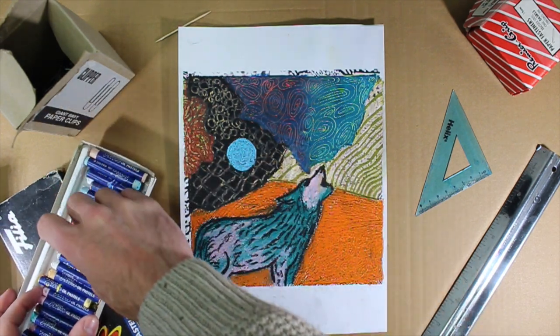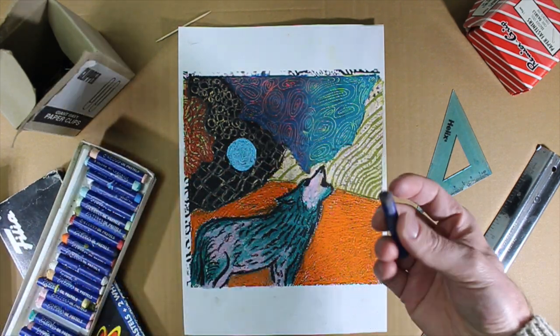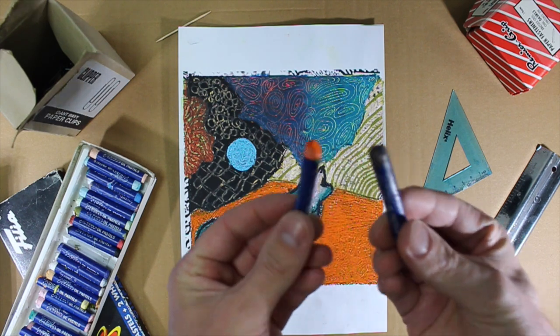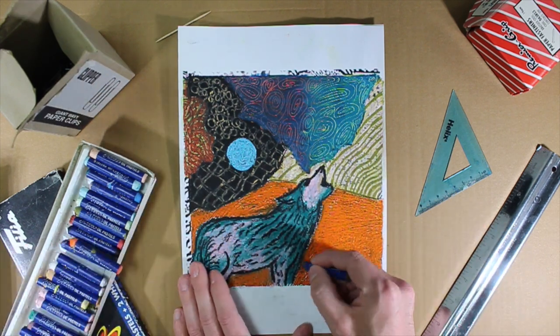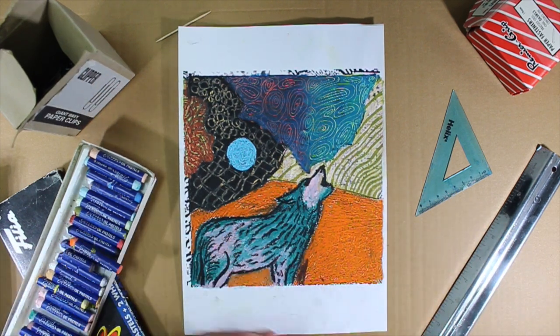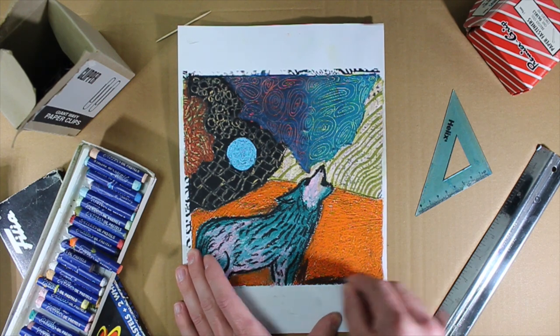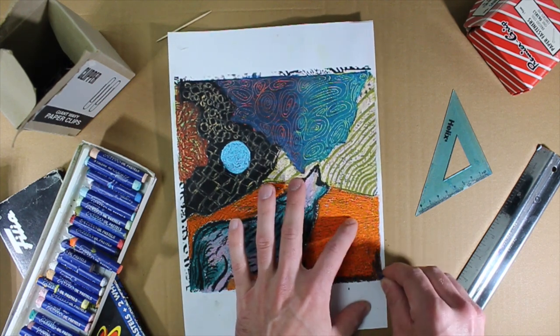To start with, pick some oil pastels that you think will look well together. But you've got to remember to put a lighter color on the bottom with a darker color over the top.